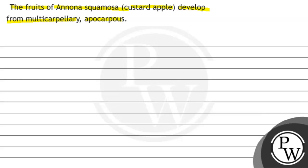This picture you will need to look at. Custard apple is like an apple, but there are some small berries present here. There are some small fruits placed here, so this is the type of fruit. When it is developed, its ovaries are multi-carpellary, and the apocarpous condition is present.